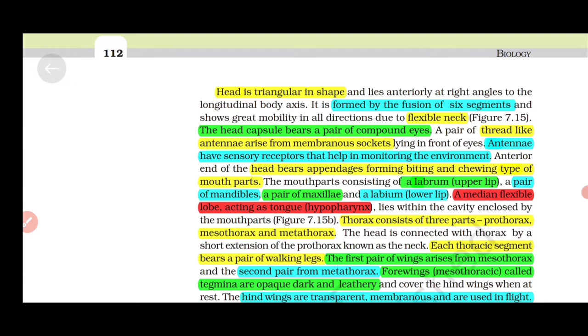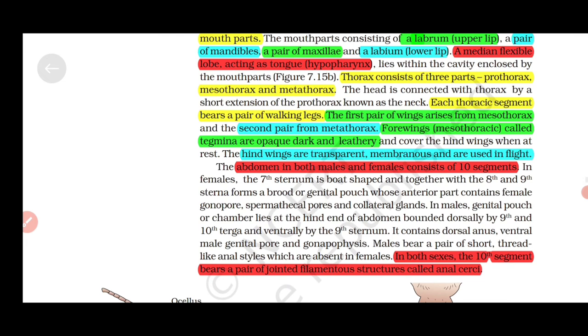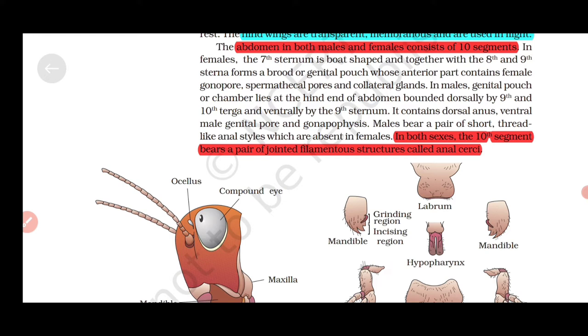The head is triangular in shape formed by the fusion of six segments with a flexible neck. The head capsule bears a pair of compound eyes. Thread-like antennae arise from membranous sockets with sensory receptors that help in monitoring the environment. The head bears appendages forming biting and chewing type of mouth parts: a labrum (upper lip), a pair of mandibles, a pair of maxillae, a labium (lower lip), and a median flexible lobe acting as tongue called the hypopharynx. The thorax consists of three parts: prothorax, mesothorax, and metathorax. Each thoracic segment bears a pair of walking legs. The first pair of wings arises from mesothorax, the second pair from metathorax. The forewings called tegmina are opaque, dark and leathery. Hind wings are transparent, membranous, and used in flight. The abdomen in both males and females consists of ten segments. In both sexes, the tenth segment bears a pair of jointed filamentous structures called anal cerci.